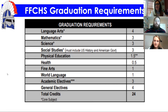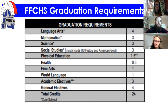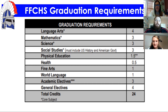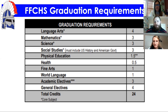For graduation, you need a minimum of 24 credits. That includes four credits of language arts, three credits each of math, science, and social studies, 1.5 credits of physical education, 0.5 credits of health — ideally completed freshman or sophomore year — one credit of fine arts, one credit of world language, three credits of academic electives, and four credits of general electives.